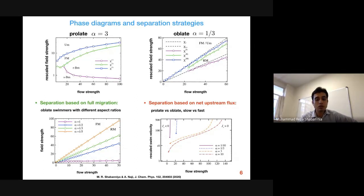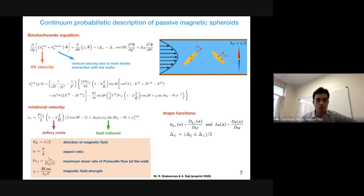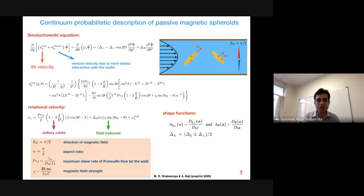This analysis can also be generalized to the case of passive particles. We use the same model, with the difference that in place of swimming speed we enter the lift velocity generated by the hydrodynamic interaction between the particles and the channel walls. The rotational velocity is basically the same as in the active particle case and therefore needs no further explanation.